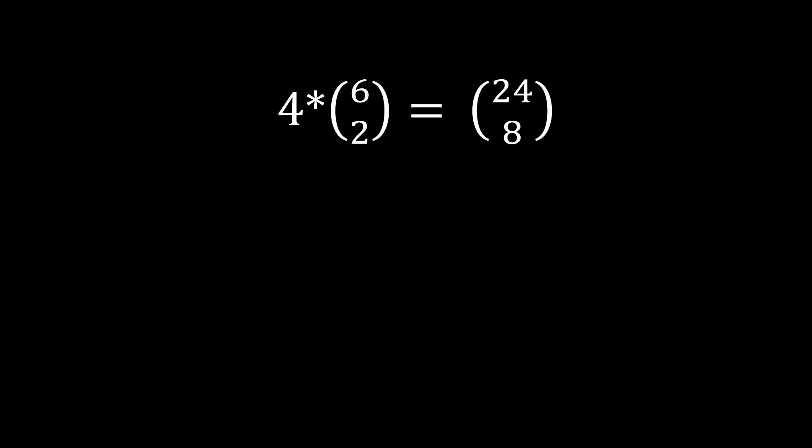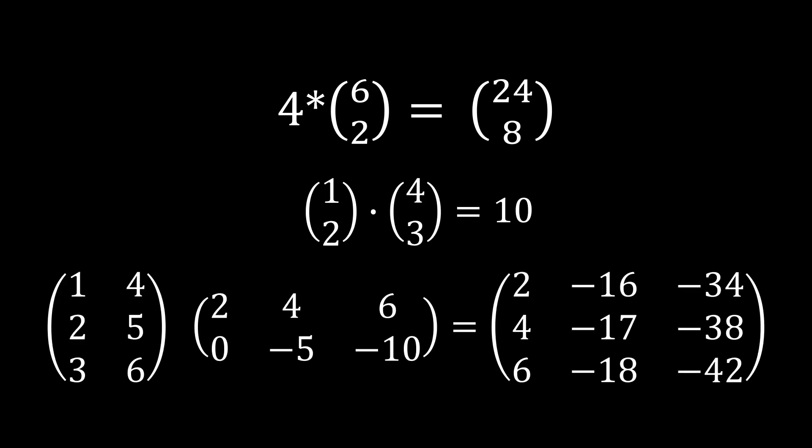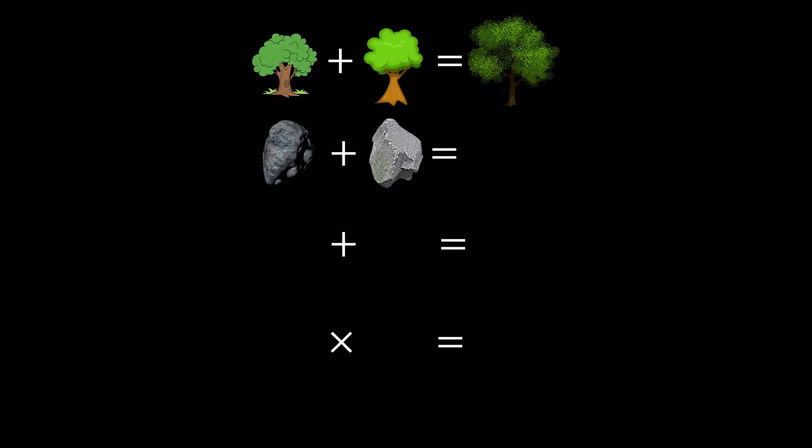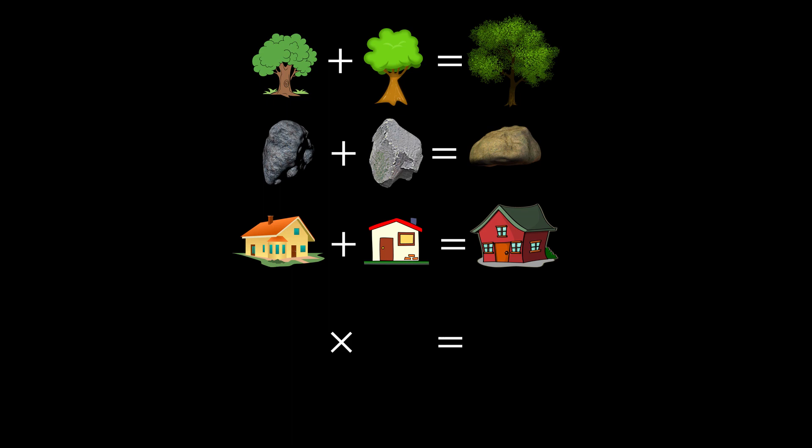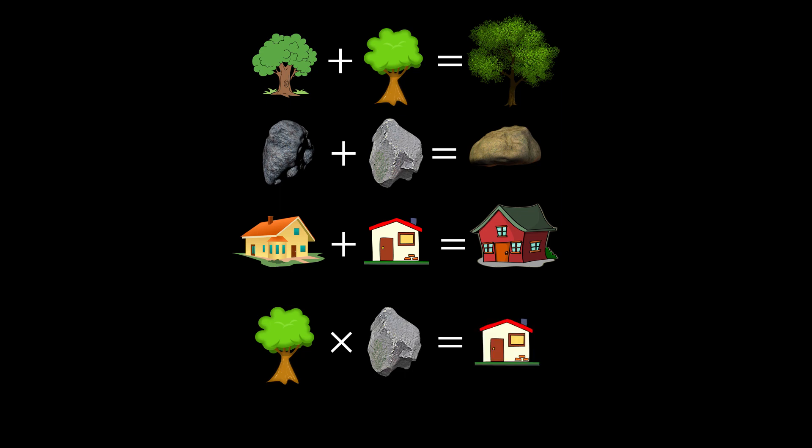Note we have left out the multiplication of a vector by a scalar, the scalar product, and the product between matrices of different dimensions. This leads us to a remark about the nature of addition versus multiplication. Addition is generally between two objects of the same nature to create another object of the same nature. Multiplication, on the other hand, can combine two objects of different natures into a third object, which can also be of a different nature from the two previous.